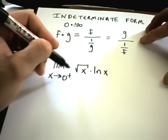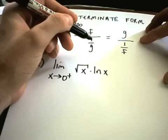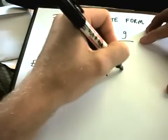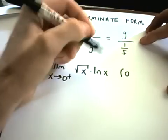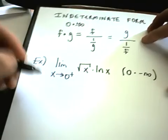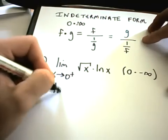So in this case, I've got the limit as x approaches 0 from the right of square root of x times ln of x. Notice as x approaches 0 from the right, square root of x is just going to be 0. ln of x though approaches negative infinity. So I have this indeterminate form.